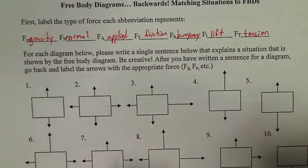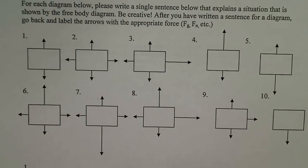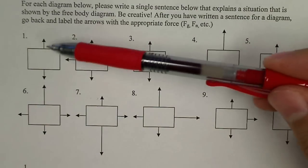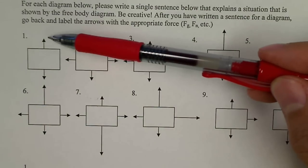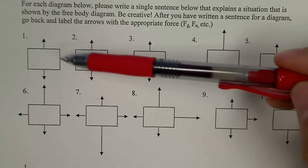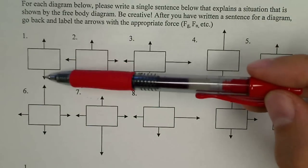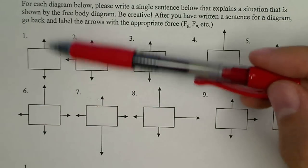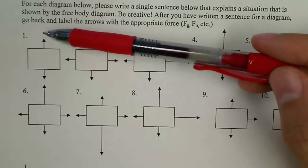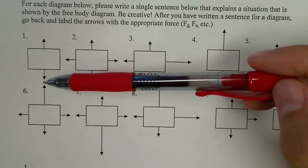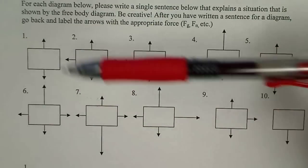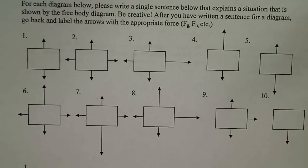So our free body diagrams will look like these. If we look at these situations, number one, there's a force down and a force up. This is something that has no forces on the horizontal, and these two are the same size, which means they're canceling out. So it's at a constant velocity up and down. It might be moving up and down, or it might be at rest, but whatever its velocity is, whether it's zero or 100, it's not changing.